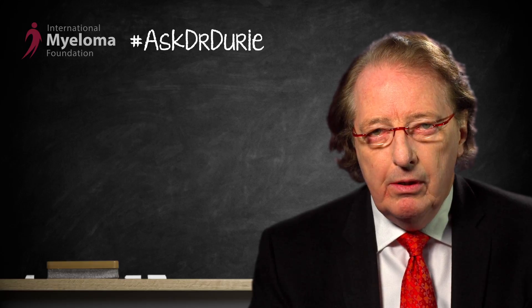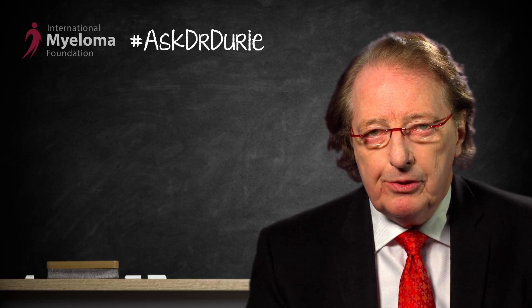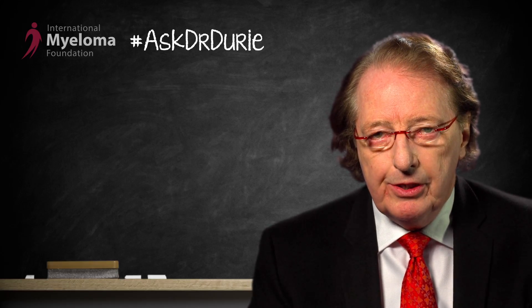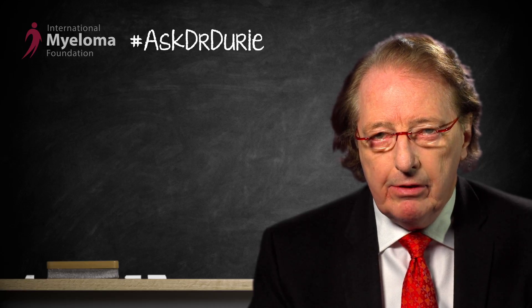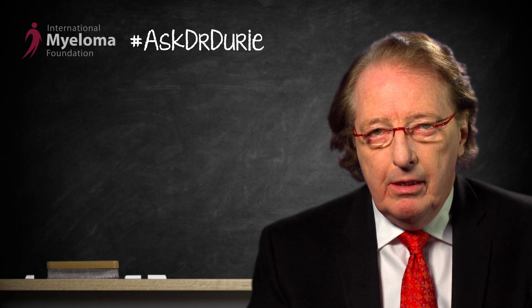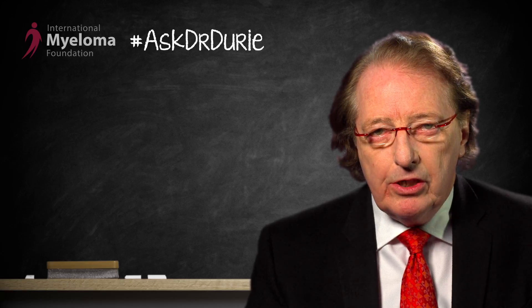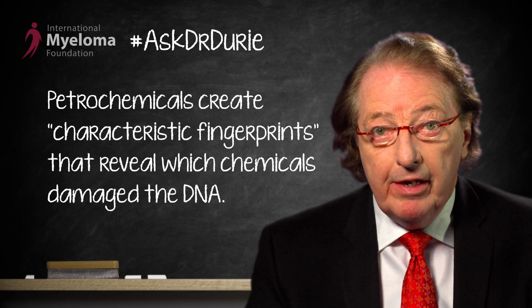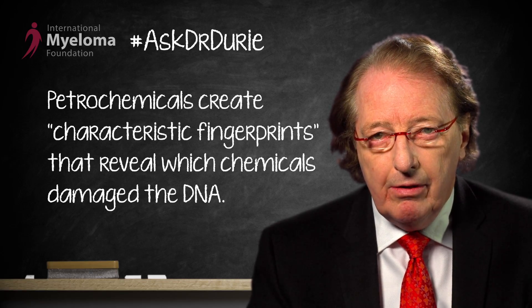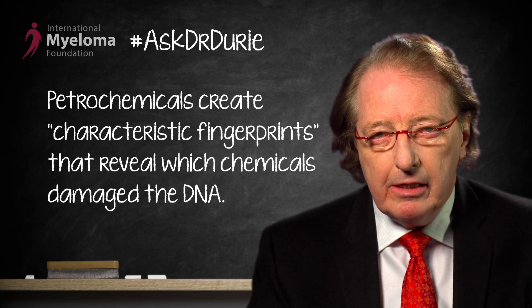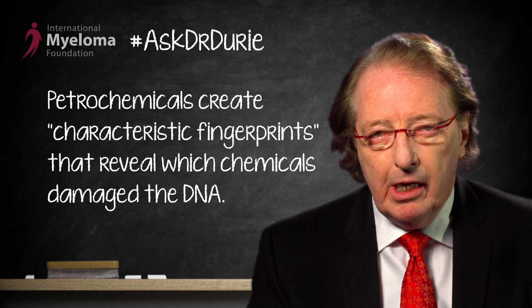We do know that certain types of chemicals — for example, petrochemicals, things like solvents and fire retardants, and different types of chemicals we encounter in the environment — not only can they damage the DNA, but they create what is called a characteristic fingerprint. So you can tell that the DNA has been damaged by a particular type of chemical.